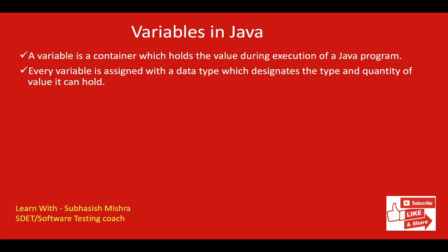Every variable is assigned with a data type which designates the type and quantity of value it can hold. Let's take one example: int i = 10. Here the variable name is i, which is associated with a value 10. int is a data type that represents that this variable can hold integer values.